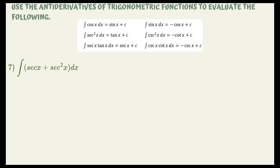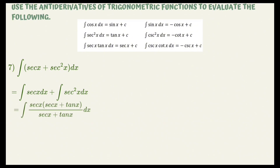For example number 7, evaluate the integral of sec x plus sec²x dx. We separate them: the integral of sec x dx plus the integral of sec²x dx. To find the integral of sec x, we multiply sec x by the given formula: sec x times (sec x plus tan x) over (sec x plus tan x) dx. Multiplying the numerator, we get the integral of (sec²x plus sec x tan x) over (sec x plus tan x) dx.